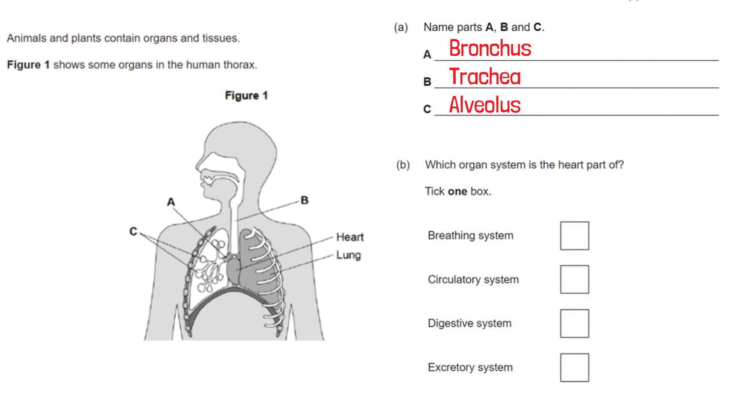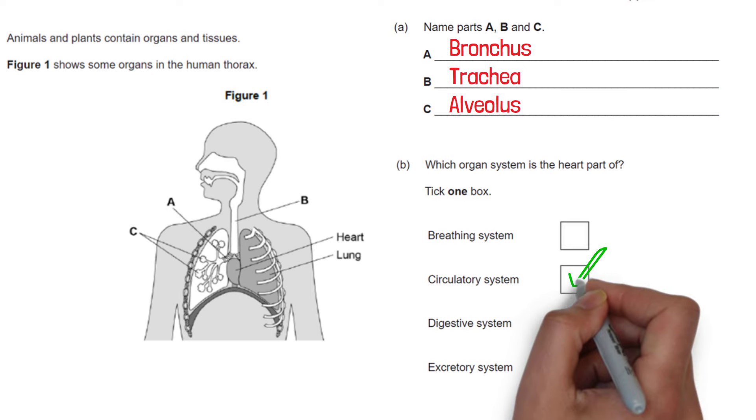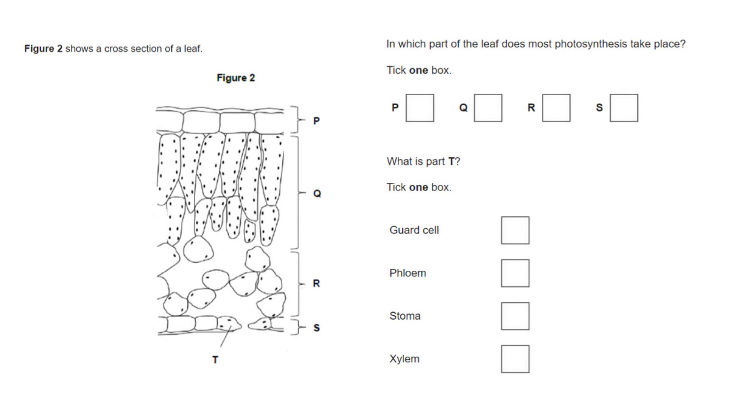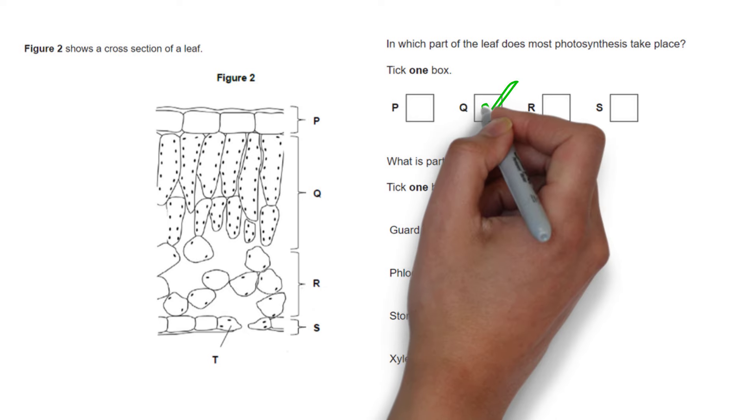Which organ system is the heart part of? The heart helps circulate blood around the body so it's the circulatory system. Figure 2 shows us a cross section of a leaf and it says in which part of the leaf does the most photosynthesis take place. Well this is going to be in the palisade mesophyll layer. The reason for this is because it contains the highest amount of chloroplasts. And as you can see from figure 2 that will be Q.